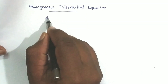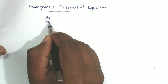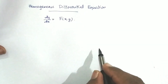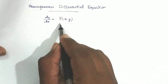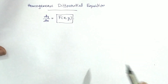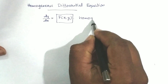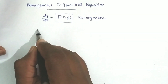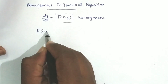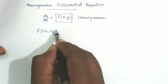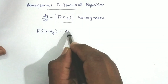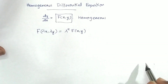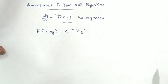First order, first degree differential equation: dy/dx = f(x, y). This is a homogeneous function. F of x and y is a homogeneous function. F(λx, λy) equals λ raised to n times f(x, y). This function is a homogeneous function of degree n.